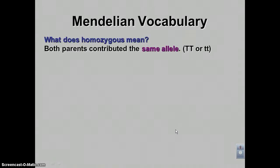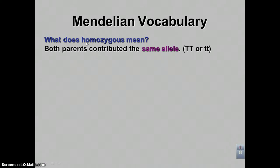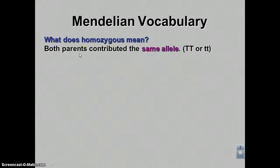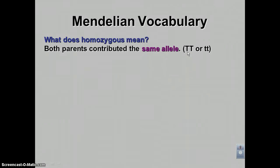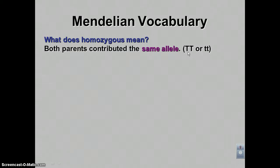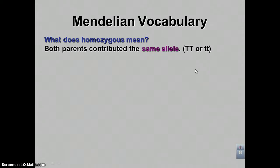The next set of words are the 'zygous' words: homozygous and heterozygous. Homozygous means both parents gave you the same allele. We would write this as big T, big T, or little t, little t. So one parent gave you the tall allele and the other parent gave you the same allele — and the same logic applies for short.